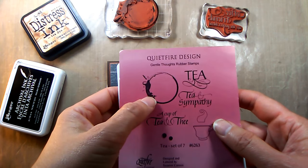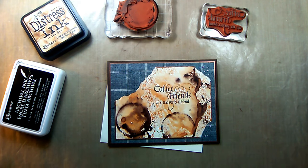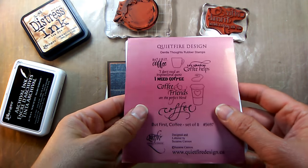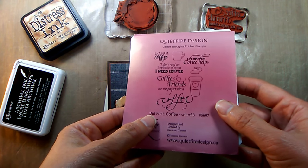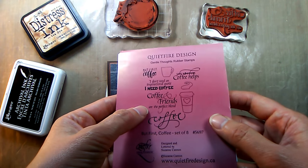I used the tea or coffee ring from the tea set, a seven stamp set, and then also the quote from the but first coffee set of eight. It's coffee and friends are the perfect blend.